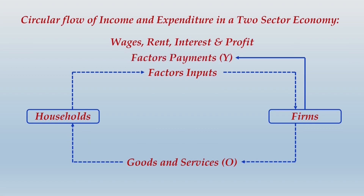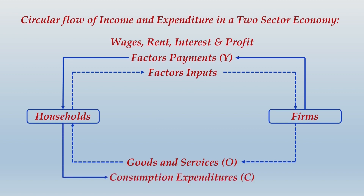Factor income becomes income for the household. Household will then pay for goods and services to the firms. Money flows from firms to household in the form of wages, rent, interest, and profit, and money flows from household to firms as payments for consumption of goods and services — simply called consumption expenditure, denoted by C.